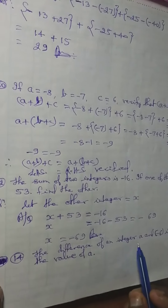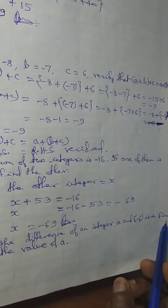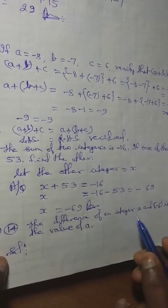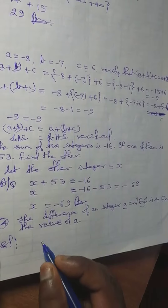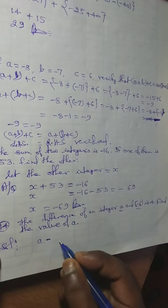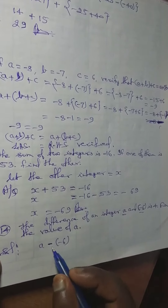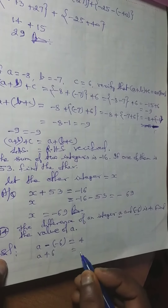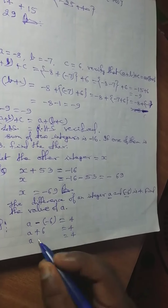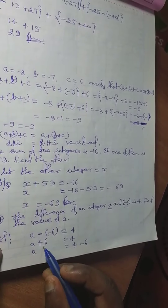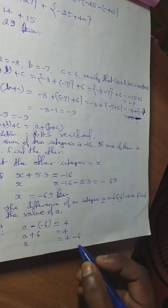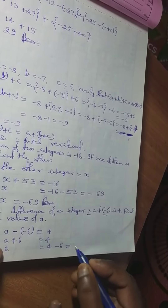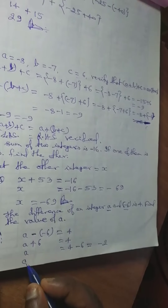Next: the difference of an integer A and minus 6 is 4. Find the value of A. Solution: A minus minus 6 equals 4, which becomes A plus 6 equals 4. Moving 6 to the RHS: A equals 4 minus 6 equals minus 2. The value of A is minus 2.